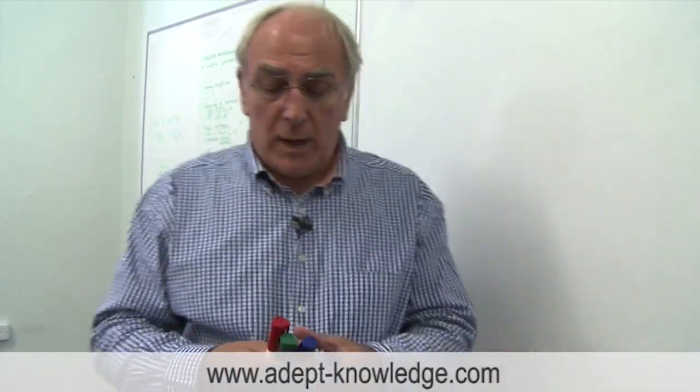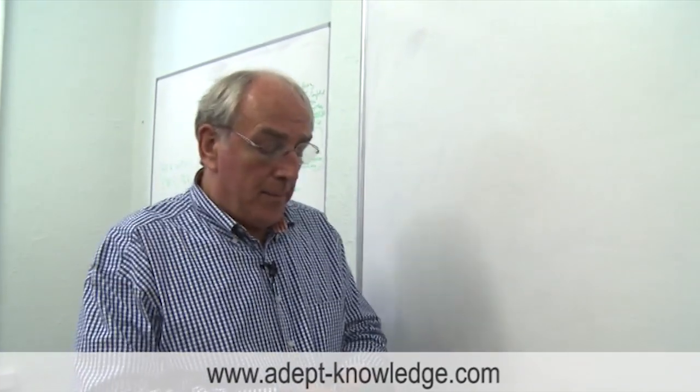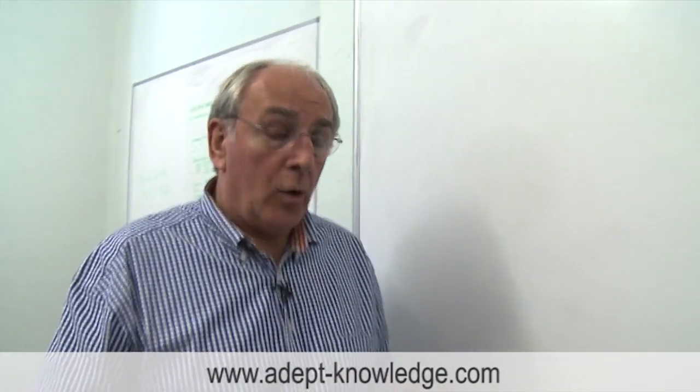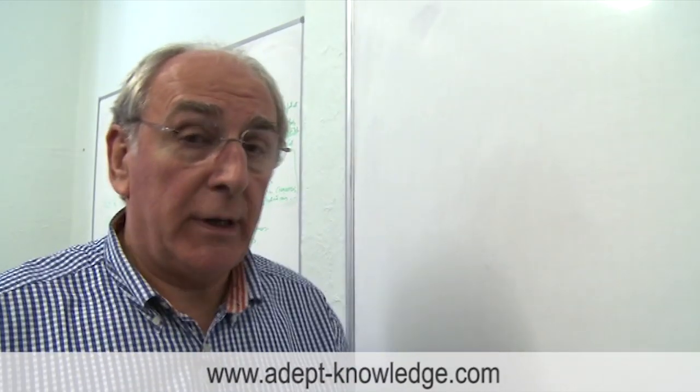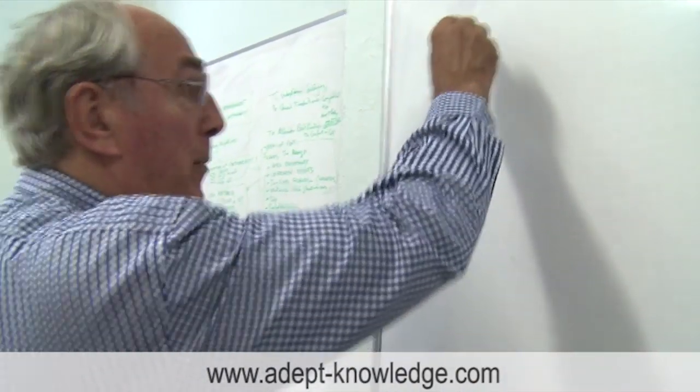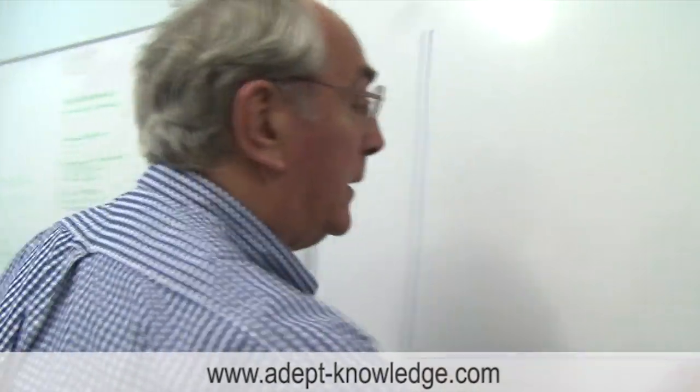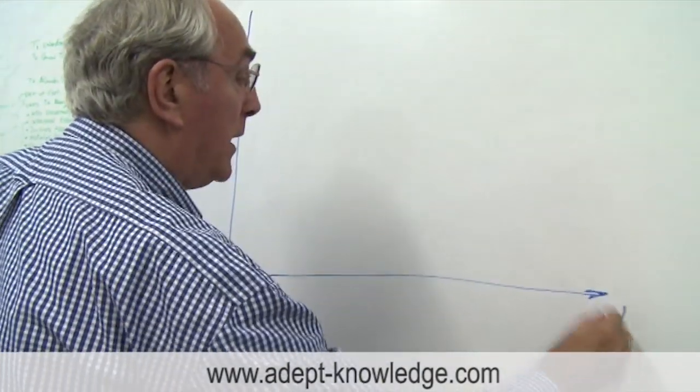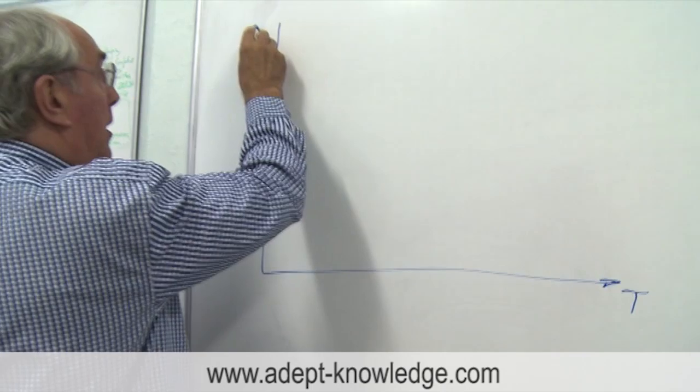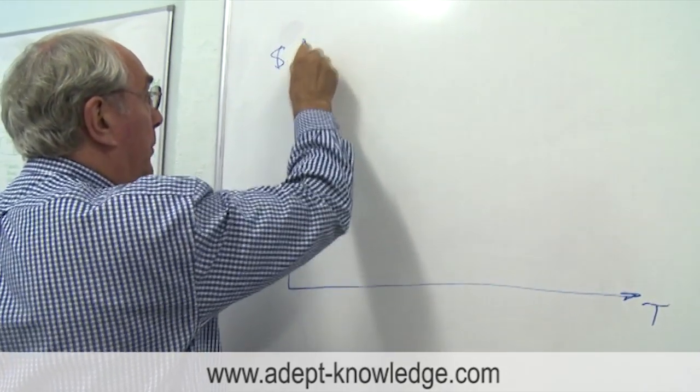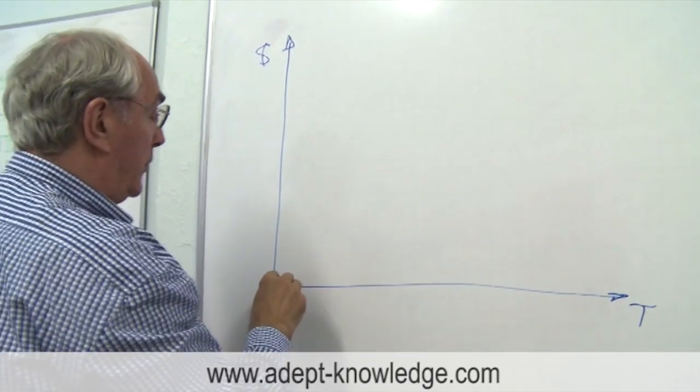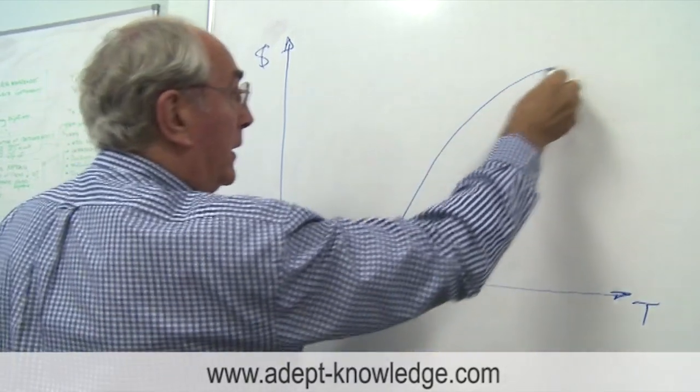So we start off by moving from all the resources or costs on a critical path network through to a bar chart as we've done before. And from the bar chart we've created a graph like this with time along there and either our costs, money or pounds up here or resources, we've developed our old friend the S curve.